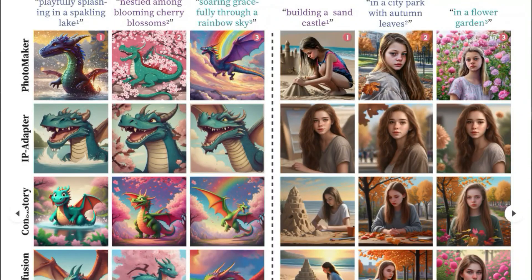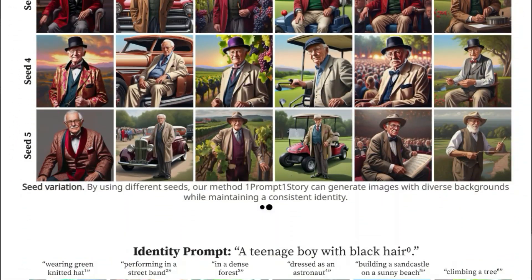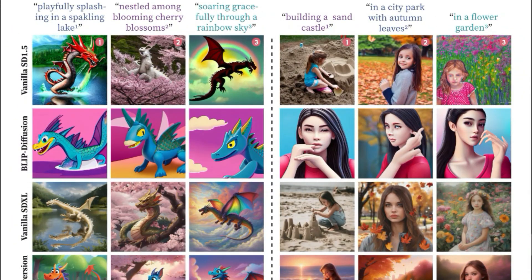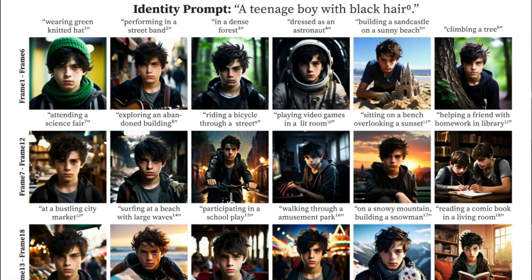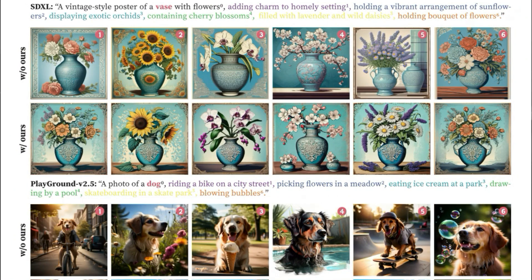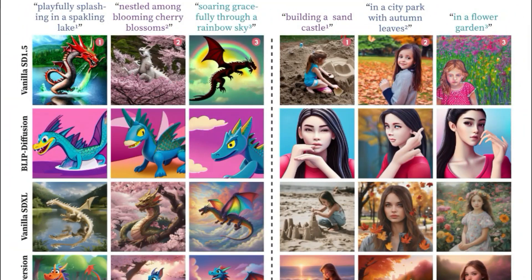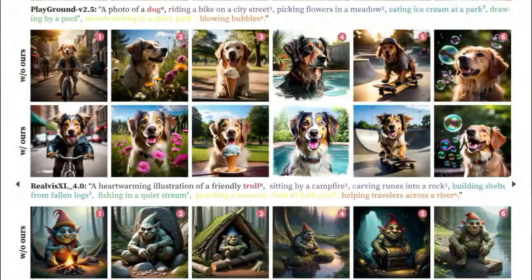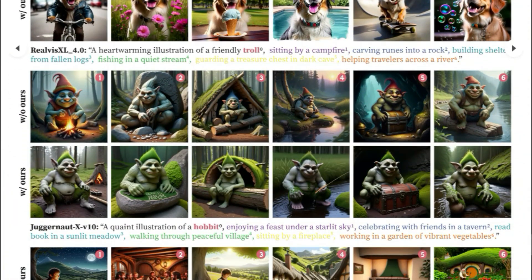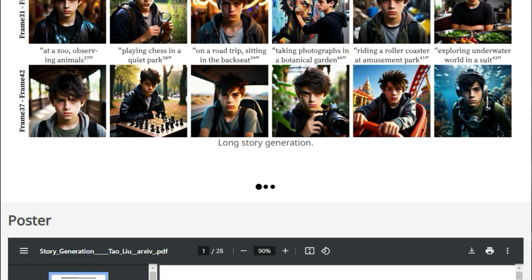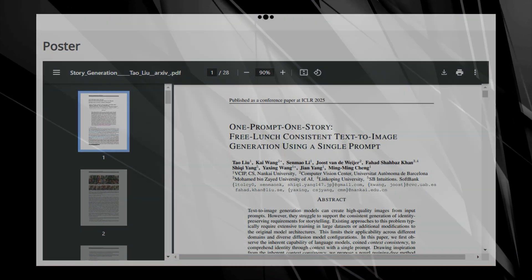The method uses two novel techniques: singular value re-weighting (SVR) and identity-preserving cross-attention (IPCA). SVR enhances the semantic information, and IPCA improves identity consistency. The result is a sequence of images where the characters stay consistent without sacrificing the link between the text and the images. This method is quite versatile — it can work with ControlNet for spatial control, can be combined with other methods like PhotoMaker for personalized generation, works with various base models, and can even handle multiple characters at once. Using different seeds can create diverse backgrounds while keeping character identity intact, offering a flexible and powerful way to generate consistent image sequences.